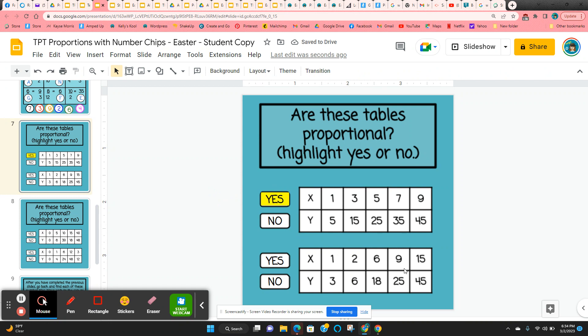The next one, multiply by three. Well, when they get to nine and 25, they're not going to multiply it by three. So no, this table is not proportional.